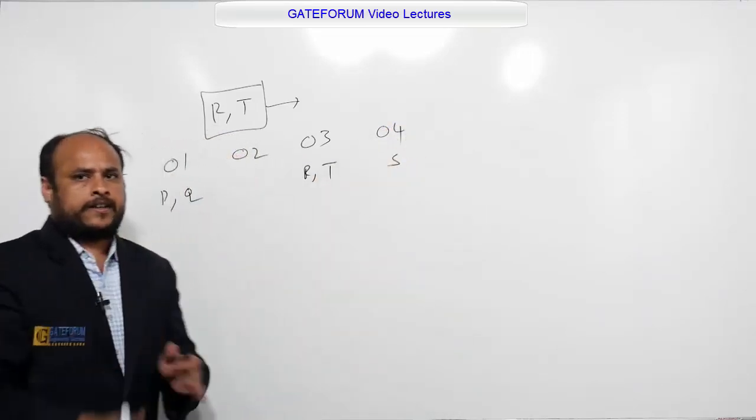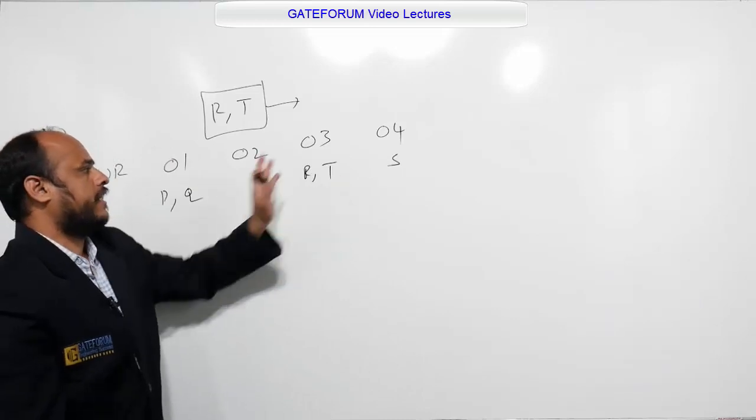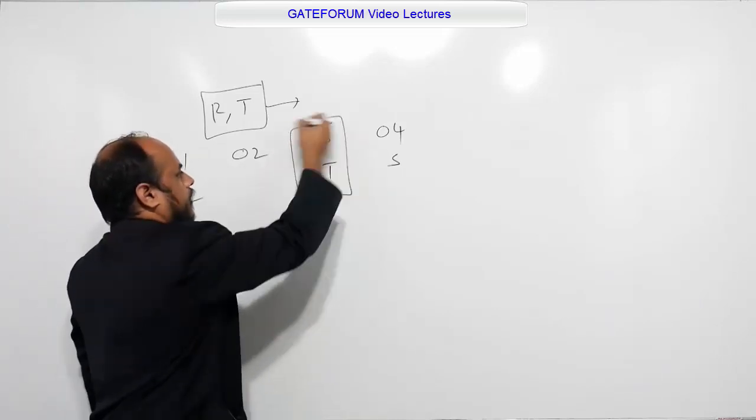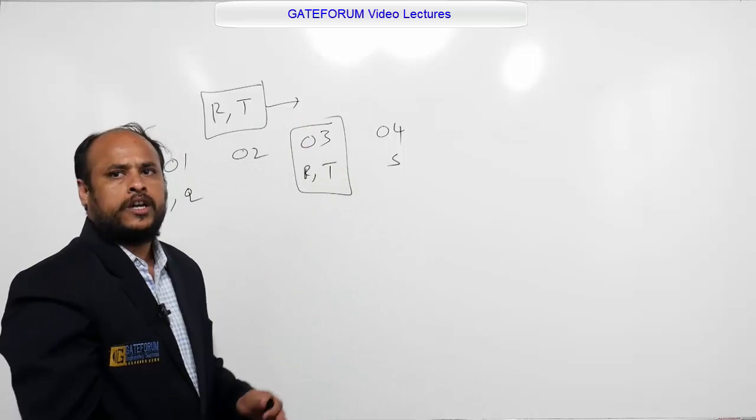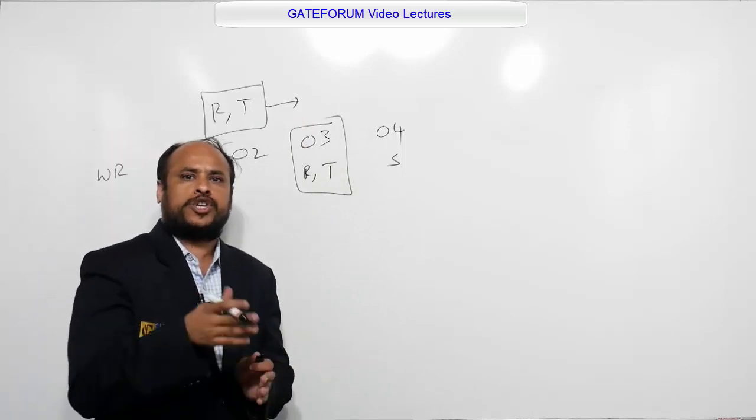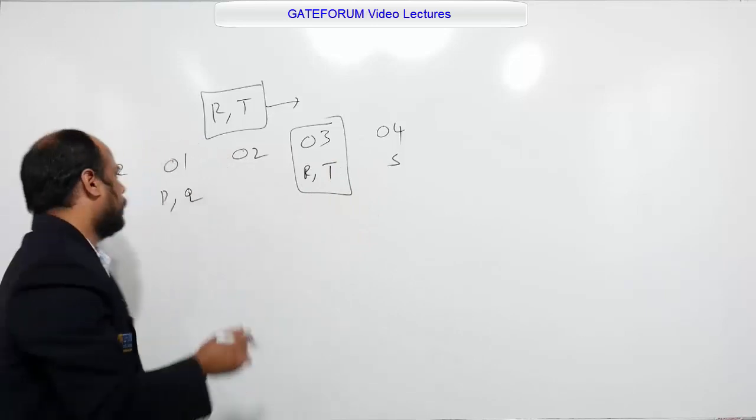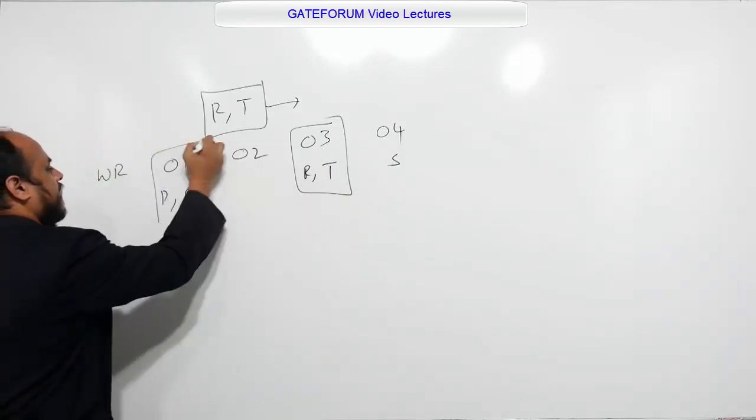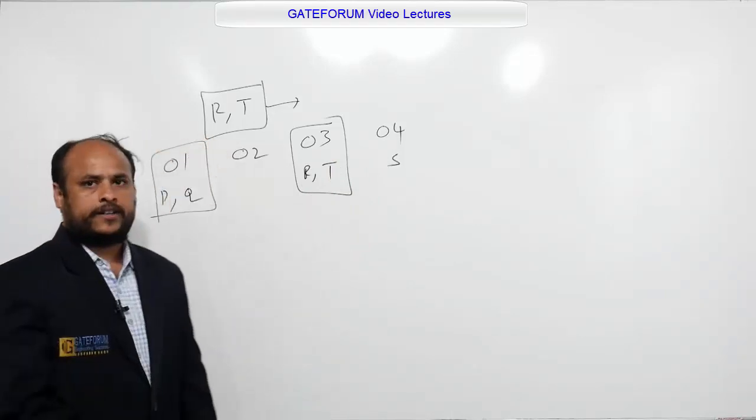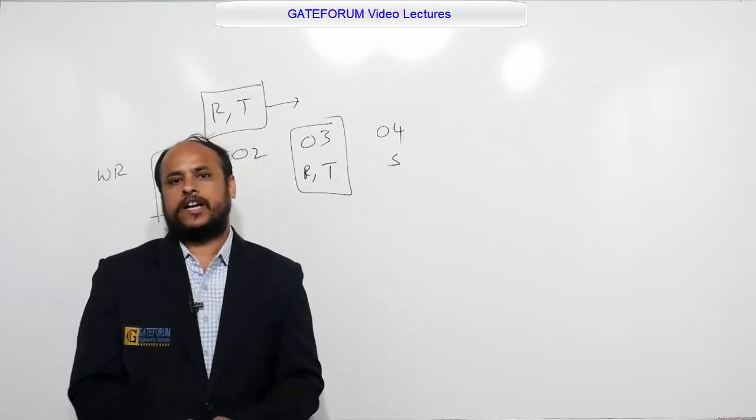According to the current location, R and T are working in the same office. Similarly, P and Q don't like each other but have to share an office till T gets a promotion. This means at present, P and Q are also working in the same office. So, according to the given conditions, the right option is A.